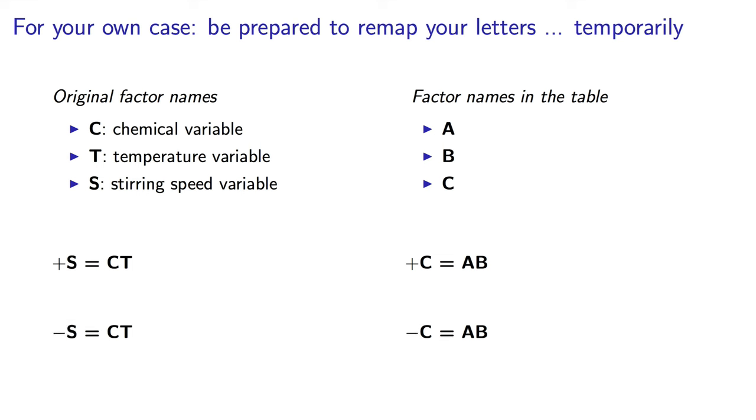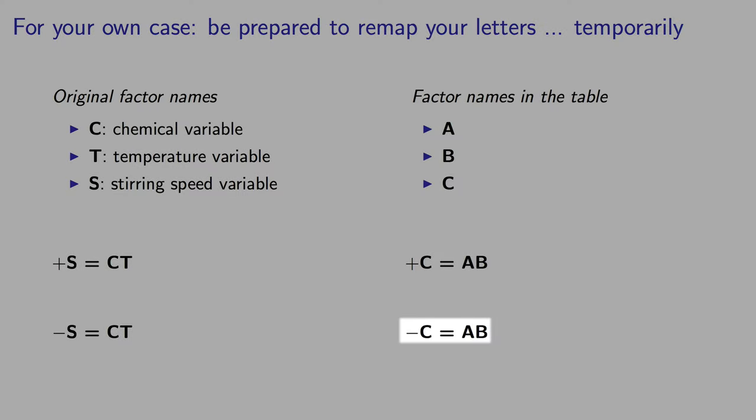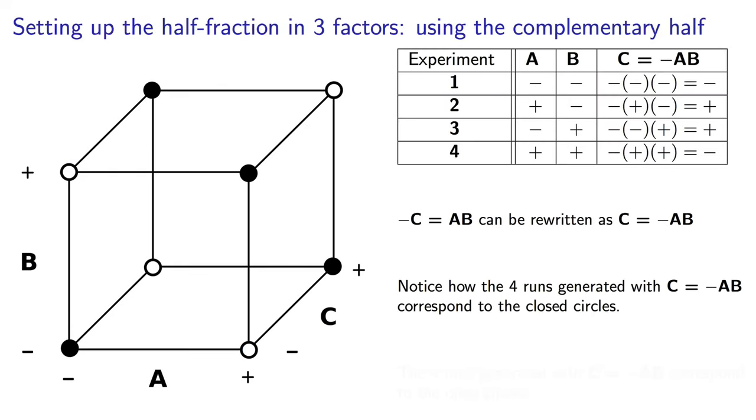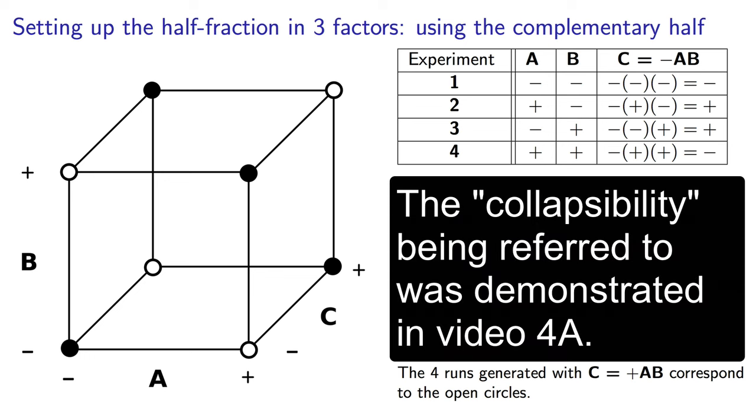Now I guess you're curious about that plus and minus sign here. If I use the minus, it says to generate minus c as the product of a times b. In our wastewater example, that would translate to minus s is the product of c times t. If you created your design following the rule with a minus sign, you would notice that you'd end up with the closed circles on the original cube, rather than the open circles. But notice the symmetry. The closed circles still have that same collapsibility we noticed earlier with the open circles.